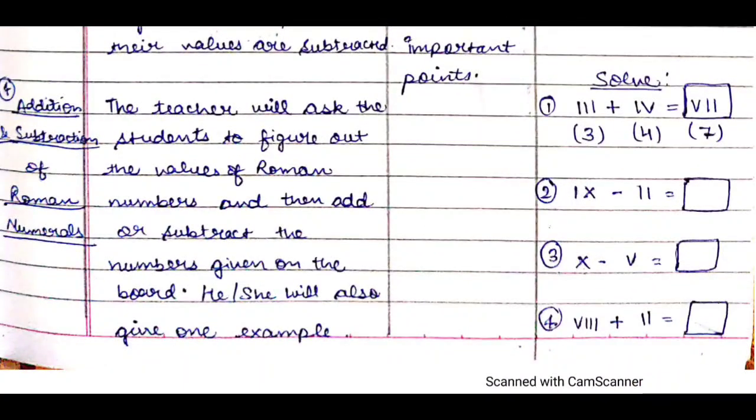After that, fourth teaching point is addition and subtraction of Roman numerals. The teacher will ask the students to figure out the values of Roman numbers and then add or subtract the numbers given on the board. He or she will also give an example. Like I have written III plus IV. So they have to write the answer VII. This way they need to figure out what are the values and then they have to solve.